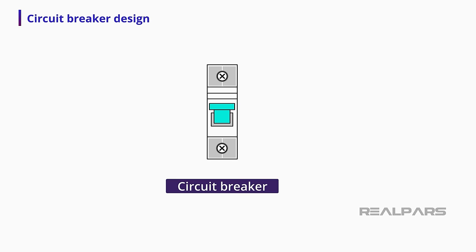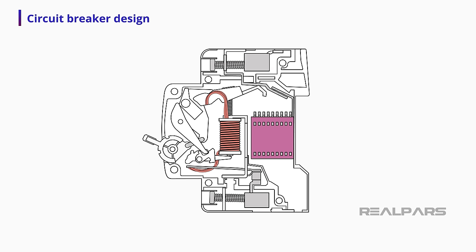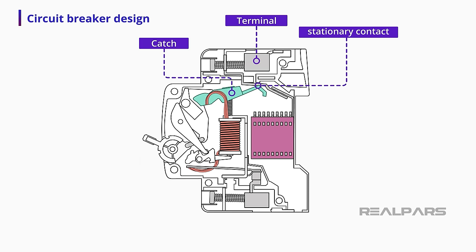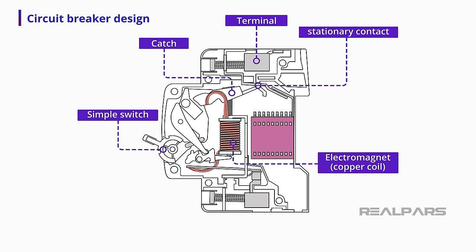Now, to understand how a circuit breaker works, let's first take a look at a cross-section of the device that shows the basic parts and design of a circuit breaker. The basic circuit breaker consists of a terminal, a stationary contact, a catch, a simple switch, an electromagnetic or copper coil, and or a bimetallic strip, and another terminal.